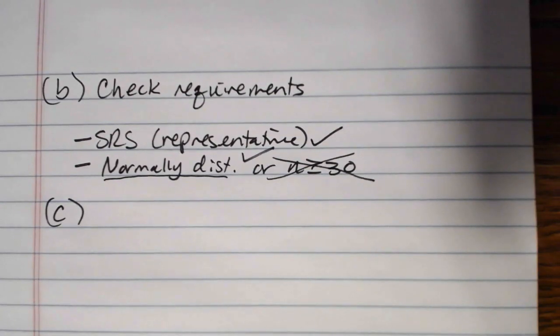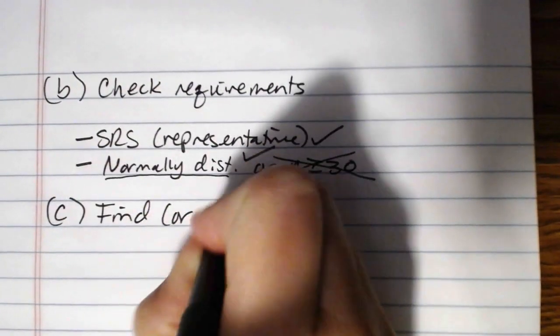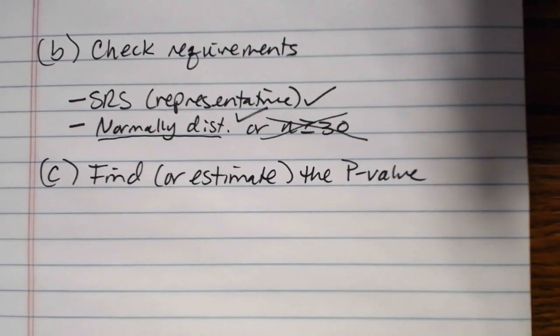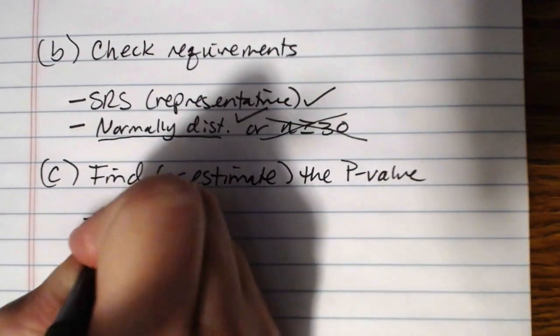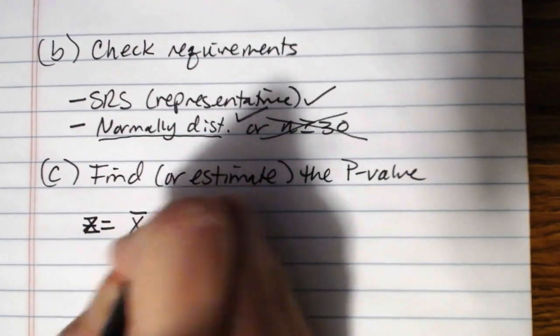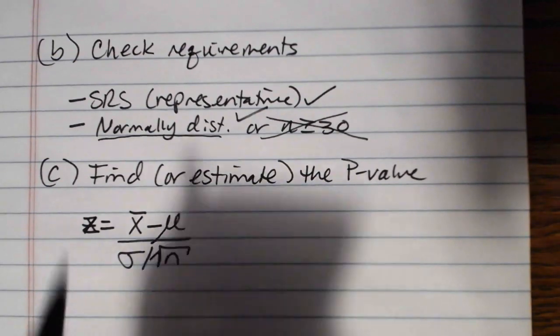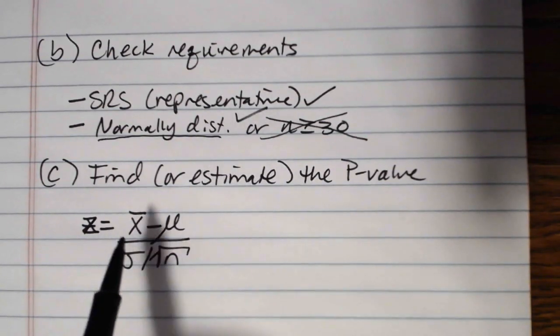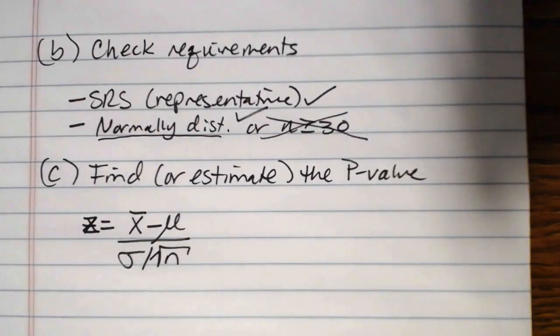Then in the next part, we want to find or estimate the p-value. Now if you're going to do this by hand, there is a formula in the textbook for doing this. You would first convert your X to Z using the formula Z equals X bar minus mu divided by sigma over root n. And then what you would do is you would calculate the probability associated with this Z score or higher since we were testing higher.